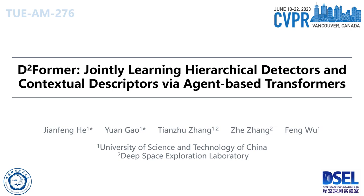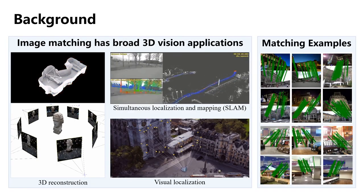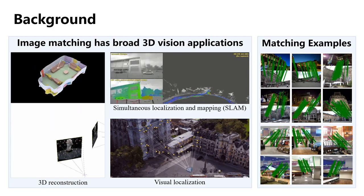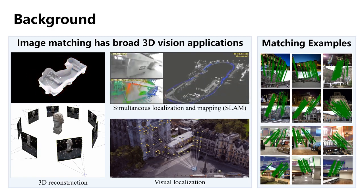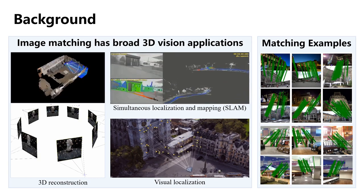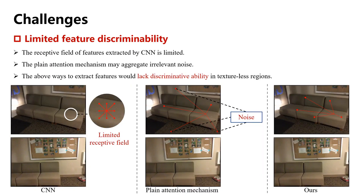Hello everyone, I'm Jianfong He, a PhD candidate from the University of Science and Technology of China. It's my great honor to introduce our work, D2Former, jointly learning hierarchical detectors and contextual descriptors via agent-based transformers at CVPR 2023. Image matching aims to find pixel-level matches between images depicting the same scene. It is a fundamental task with a wide range of 3D vision applications, such as 3D reconstruction, simultaneous localization and mapping, and visual localization. Owing to its broad real-world applications, the image matching task has received increasing attention in the past decades. For the image matching task, there are two major challenges: the first is limited feature discriminability. Previous detector-based matching methods usually use CNNs to extract image features, with limited receptive field.